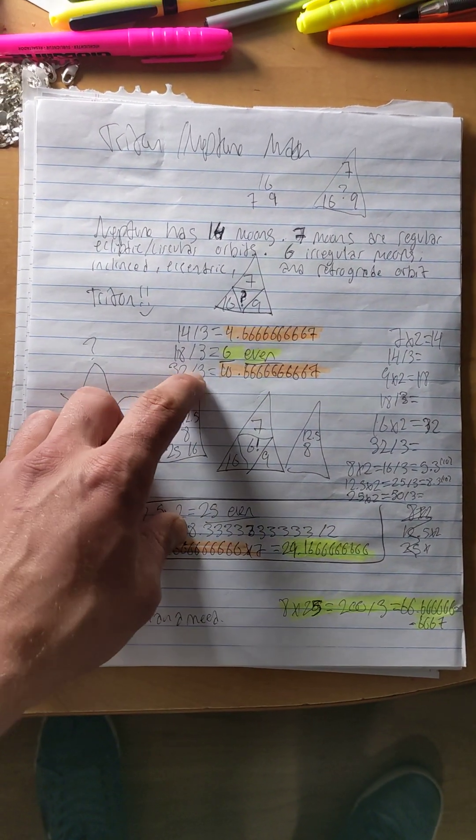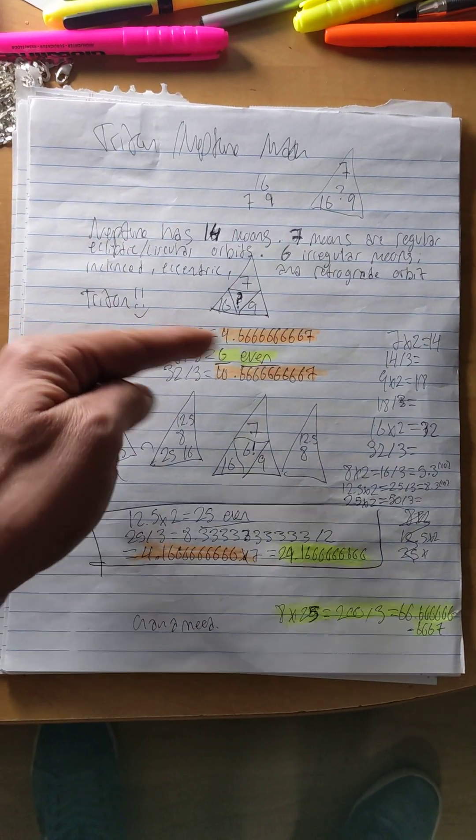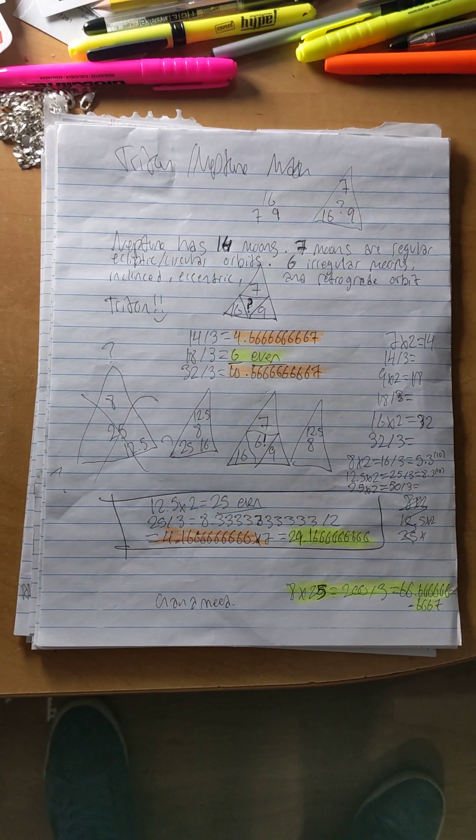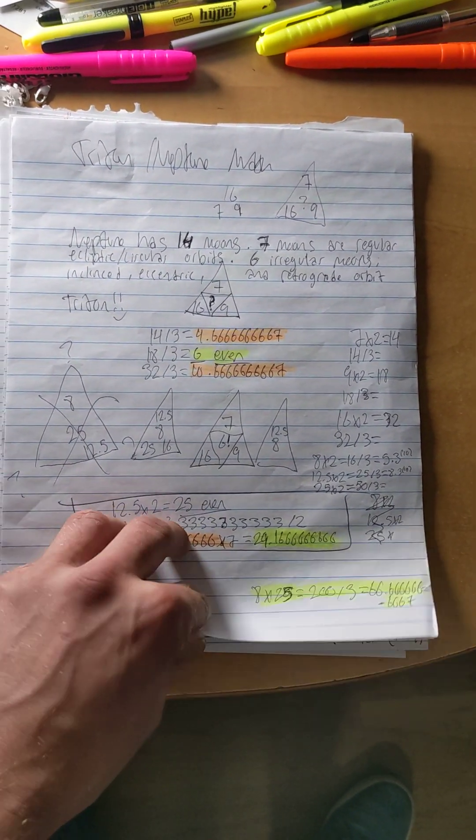This is Neptune math. This is the moon Triton on Neptune. I love that moon, man. That's our future after Enceladus, or whatever on Saturn.